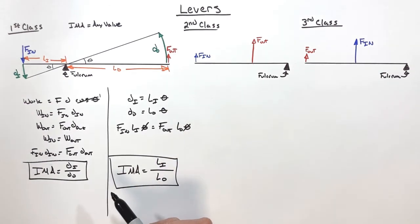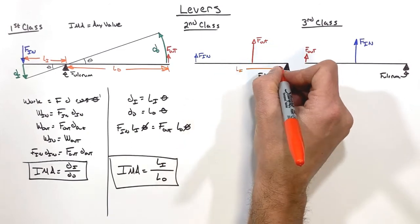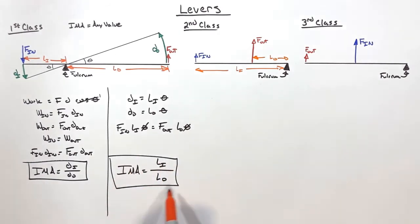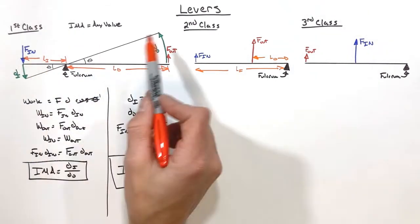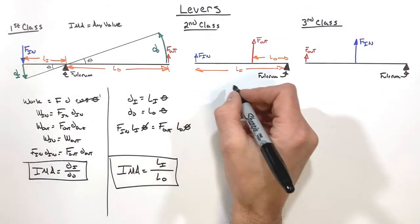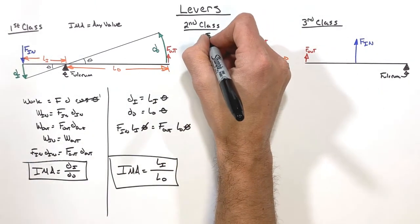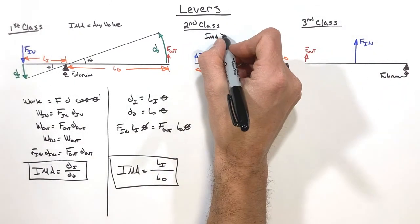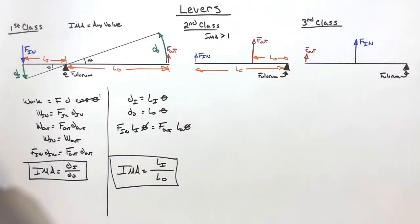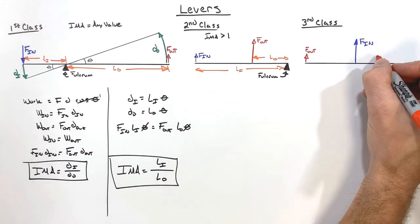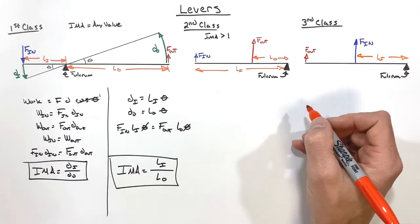Now when I look at second and third class levers, on a second class lever our input is always going to be greater than our output. So looking at this equation, which applies not just to a first class lever but to all classes of levers, we can find that for a second class lever the IMA, because L_i is always going to be greater than L_o, is always going to be greater than one.